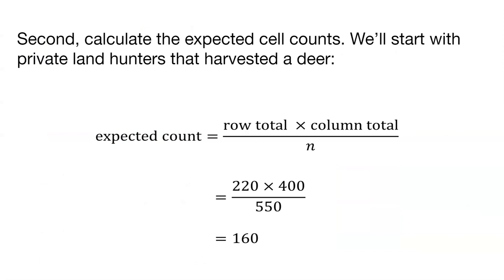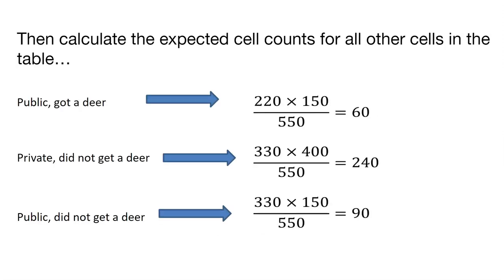We can calculate the expected number of cell counts. We'll start with private land hunters that harvested a deer. We take the row total times the column total and divide that by N. We had 220 people in that row for private land hunters that harvested a deer, 400 people in that column, divided by 550, and that's 160.